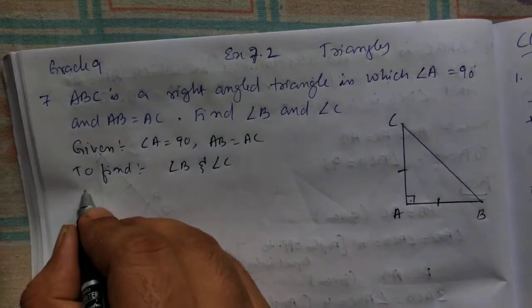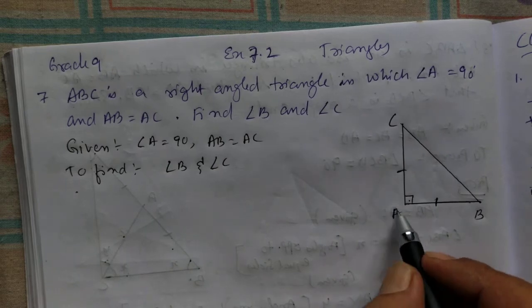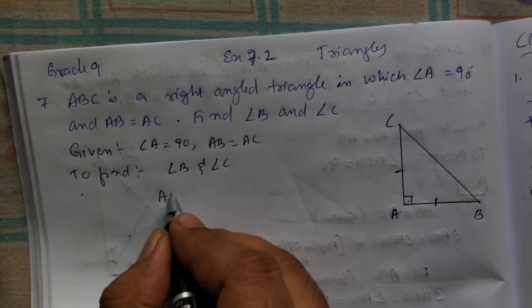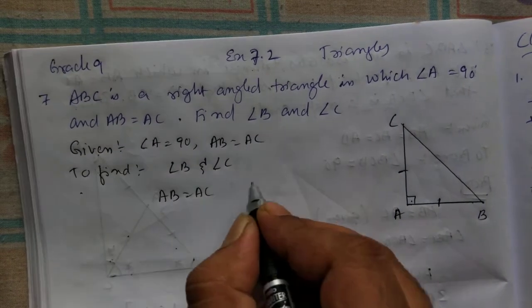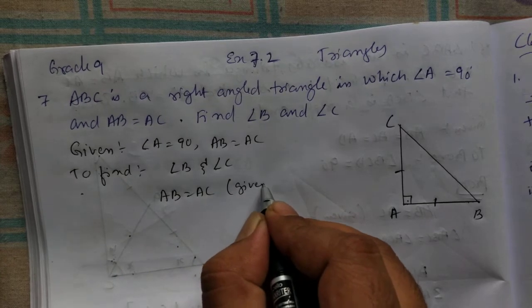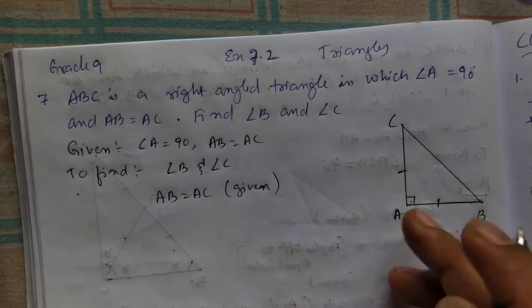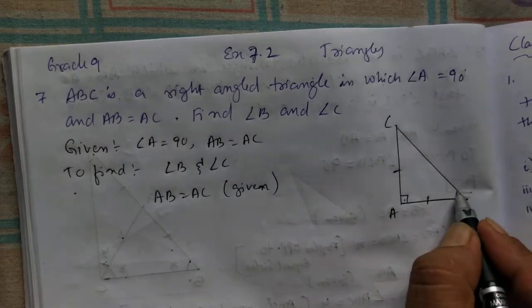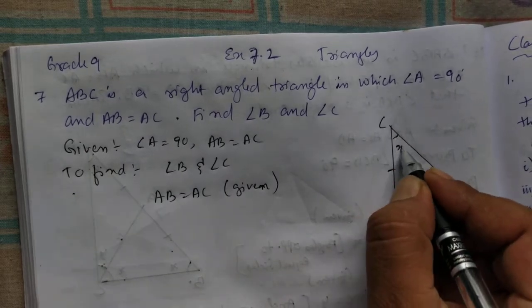So to find this, first you write AC is equal to AB. AB is equal to AC is given. Then, if opposite sides are same, this opposite angle also will be same. We'll just write X.